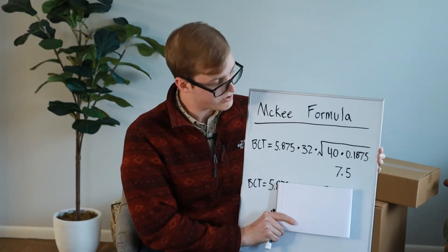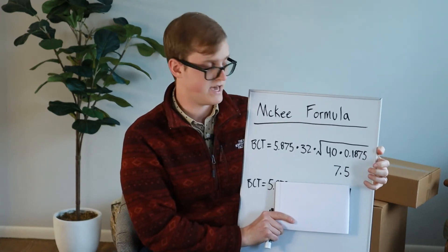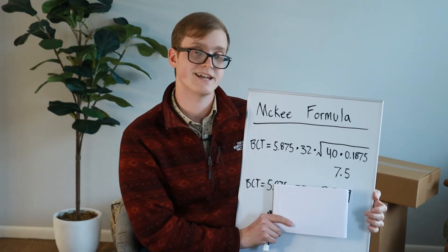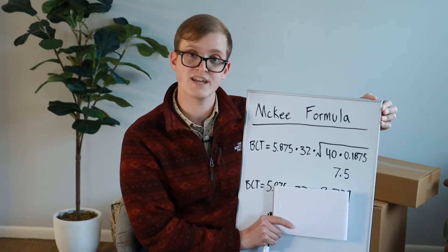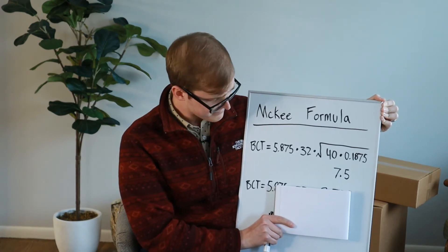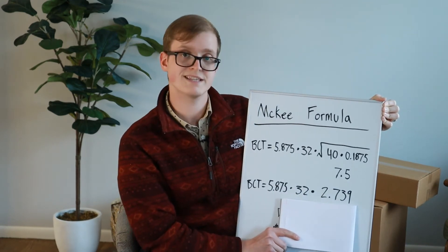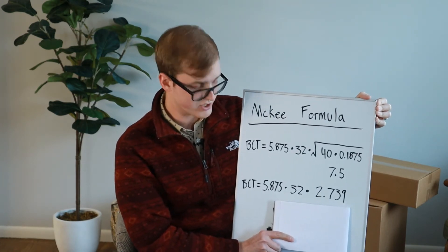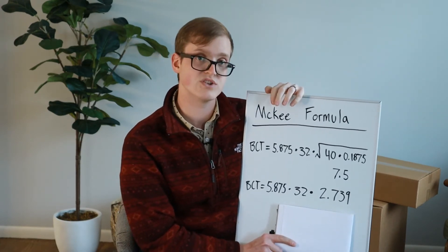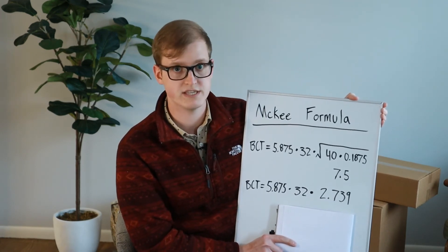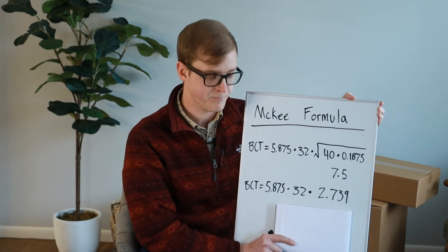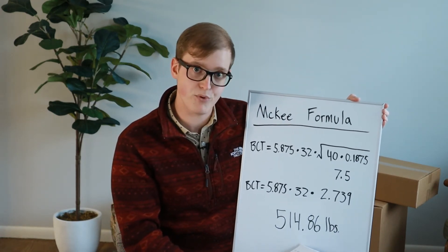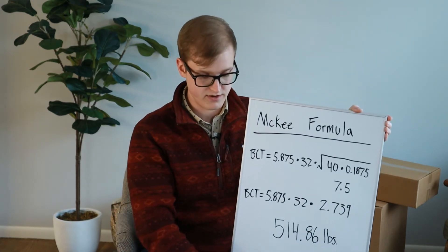Okay, so now calculating it out, we go first underneath the square root and figure out what that is. So 40 times 0.1875, we get 7.5. Now we take the square root of that. And so if you're doing this on a calculator, obviously it makes it easy. Just hit your square root button and then punch in 7.5. And that is going to give us 2.739. I'm rounding to the third decimal place. And so now we can write out the whole equation with just the numbers. So we start again with our constant, which is 5.875 times 32, which is our ECT, times the 2.739.